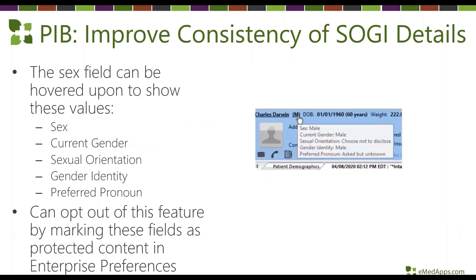Next Gen has done a few updates to the patient information bar. If you hover over the patient's gender, it will pop up with fields including sex, current gender, and sexual orientation, making that information readily accessible from the EHR. If you're not a fan of this option, you can opt out by marking those fields as protected content, though that does limit the availability of those fields in other areas.